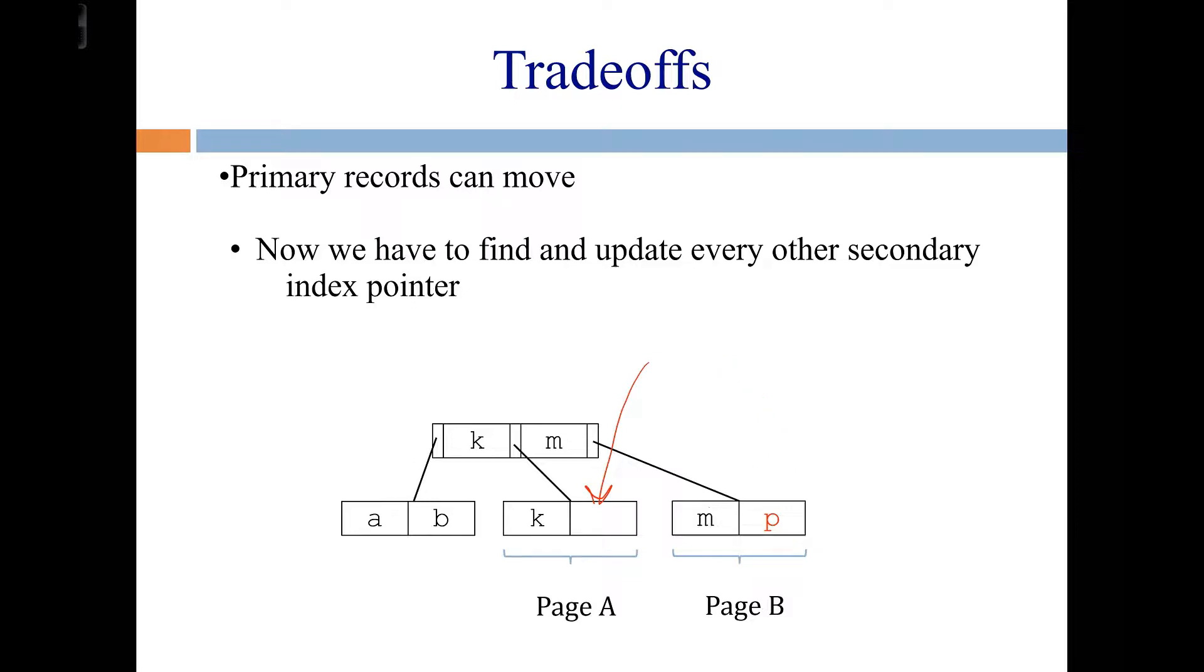Whereas if the secondary index just uses the primary key as its pointer, none of them have to change. We can go do a search through the secondary index, find P, and then do a search through this new primary index, and it will automatically just be updated, and it will go find the right row for the record with primary key of P.